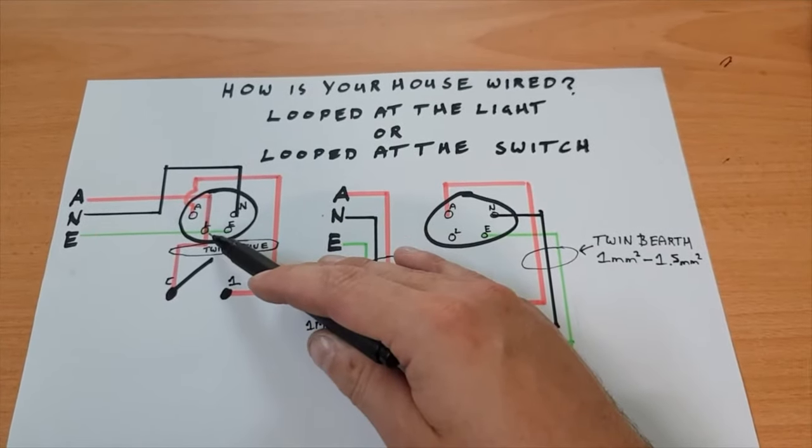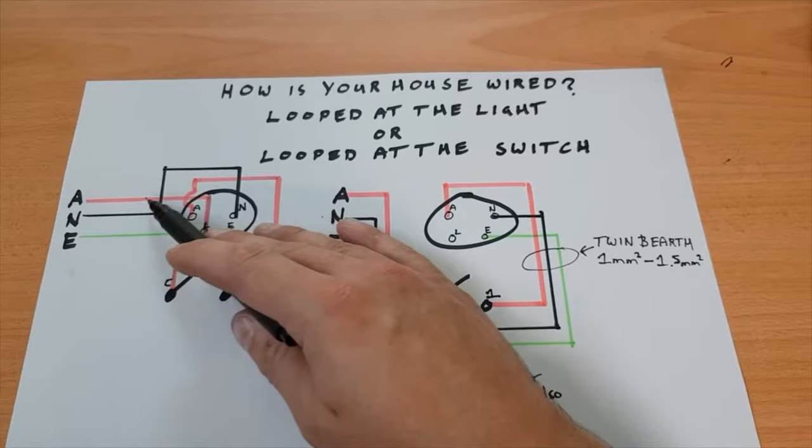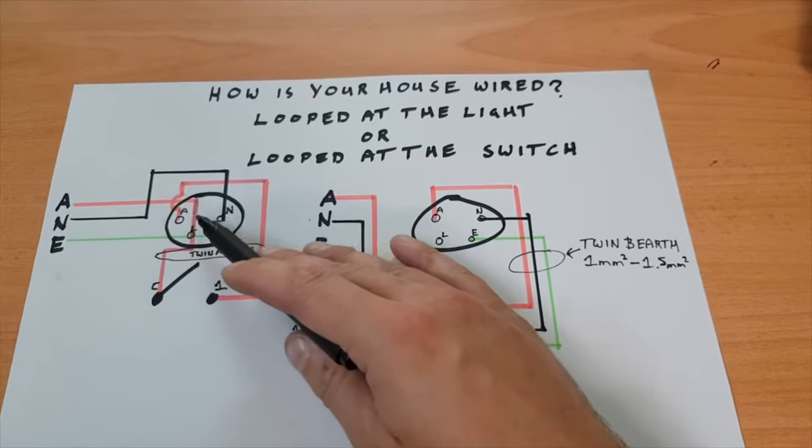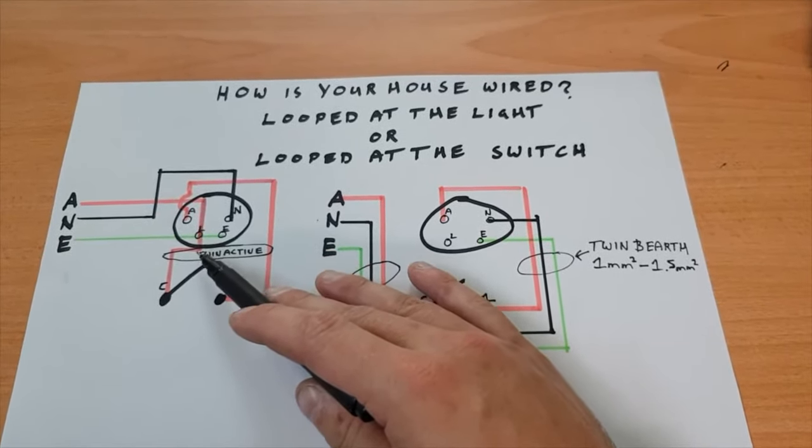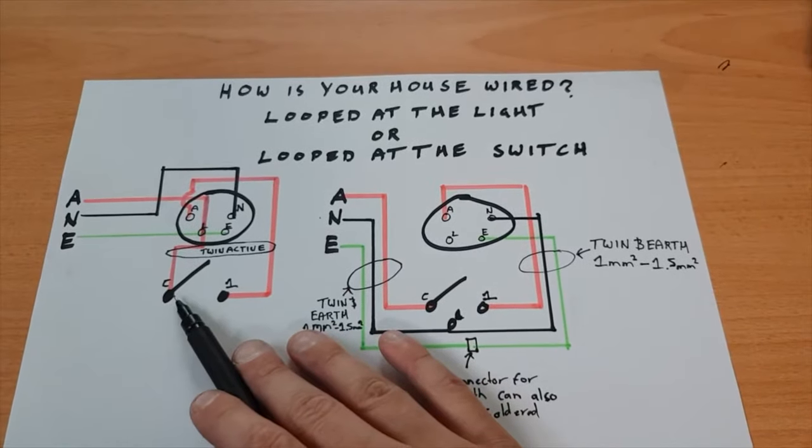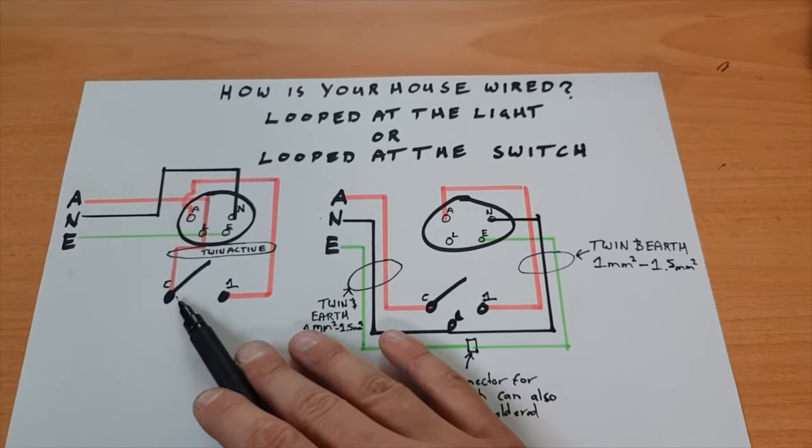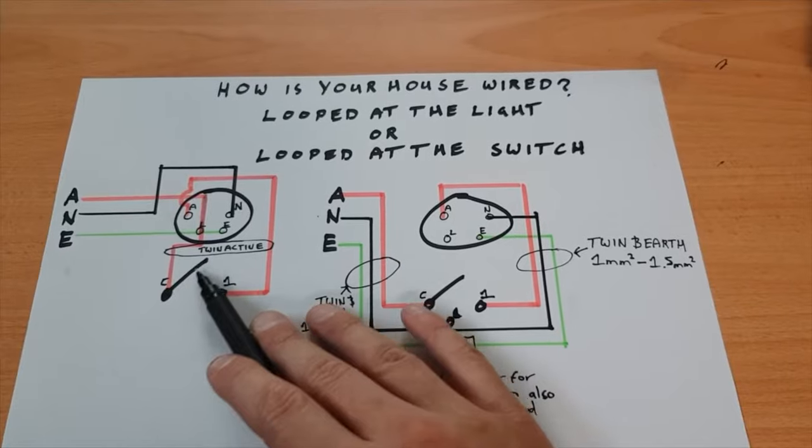That'll go into your looping terminal. So straight from your switchboard, out of your circuit breaker to your looping terminal, it'll come down to the common of your light switch.